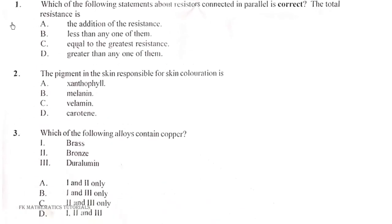The first question. Which of the following statements about resistance connected in parallel is correct? The total resistance is A, the addition of the resistance, B, less than any one of them, C, equal to the greatest resistance, D, greater than any one of them.